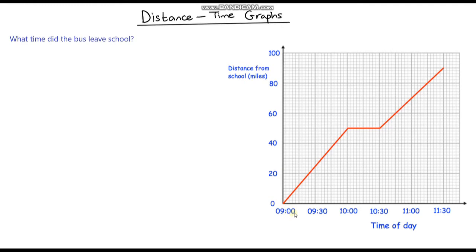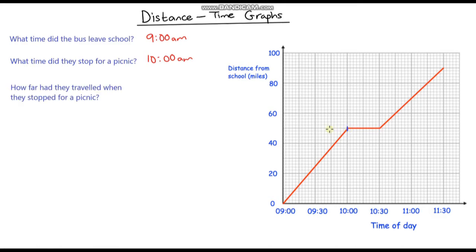They leave at nine o'clock in the morning. The next question is: what time did they stop for a picnic? They stopped for a picnic here, and the time, if we go down, is 10 o'clock. And following on from this, how far have they travelled when they stopped for a picnic? If we go along to our y-axis, our distance axis, we can see it is exactly halfway between 40 and 60, which is 50 miles.